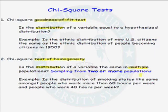Here's the example: is the distribution of smoking status the same amongst people who work more than 60 hours per week and people who work 40 hours per week? The two different populations are the population of people that work more than 60 hours per week and the population of people that work 40 hours per week. Using this test, we can determine whether the smoking status is the same in these two populations.